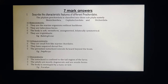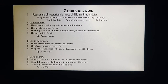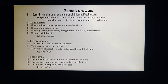Urocordata: the notochord is confined to the tail region alone. The adults are mostly sessile forms — they are immobile and fixed to a substratum. The body is enveloped by a tunic or test, which is a cover-like structure. Example: Ascidian.